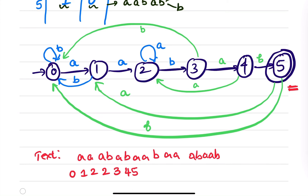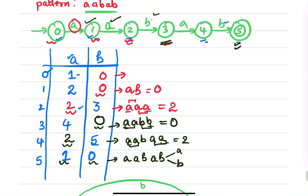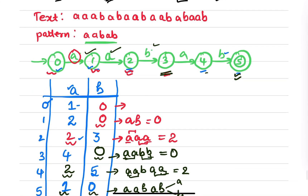Five is a final state and you have reached it, meaning the pattern 'aabab' is present in the string. But I'm traversing the complete text for you. From five on 'a' go to one, then 'a' → two, 'b' → three, 'a' → four. Sometimes questions ask for the sequence of states traversed, which is why I traverse the complete state sequence. This is how we do finite automata string matching.